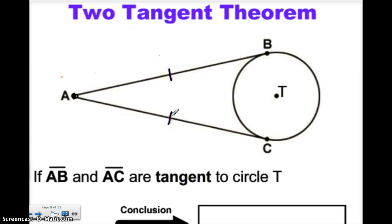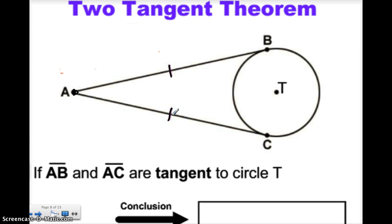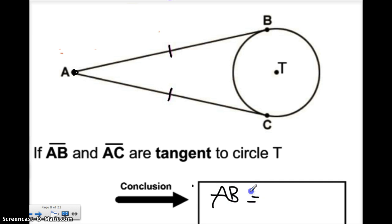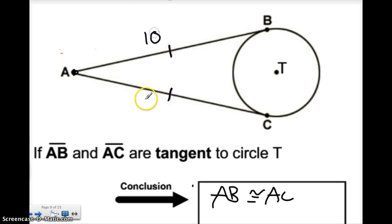So what can I say here? I have AB and AC. My conclusion that I'd reach, quite simple, is that AB is congruent to AC. So for example, if I knew AB was 10, guess what AC would be?